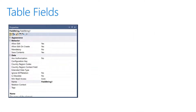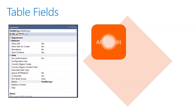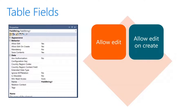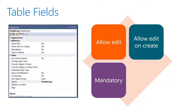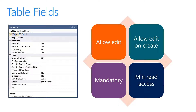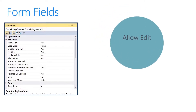Let's take a look at some field properties for tables related to security setup. First, Allow Edit defines whether you can change the value of a field. Allow Edit on Create allows you to edit the field only until the record is saved — once saved, the value is locked. Mandatory requires the field to be entered; the record cannot be saved without a value. For a string this means the value cannot be blank; for a number it cannot be zero. Lastly, Min Read Access determines whether the field can be auto-authorized for access.